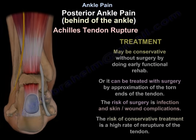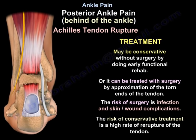Treatment of Achilles tendon rupture may be conservative, using early functional rehabilitation, or surgical, by approximation of the torn ends. The risk of surgery includes infection and skin and wound complications, while the risk of conservative treatment is a high rate of re-rupture.